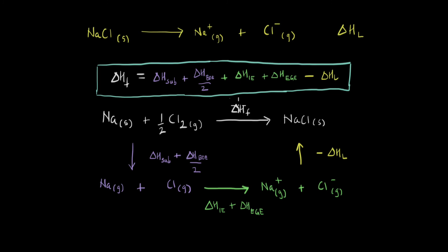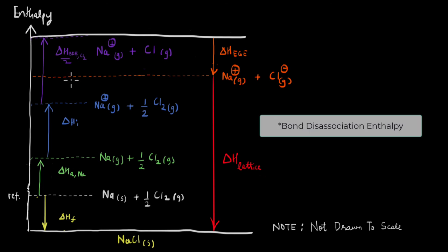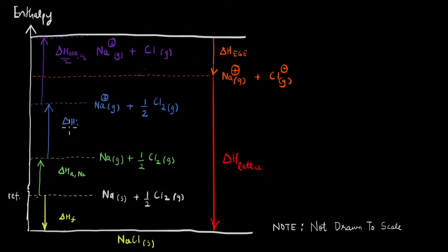The same idea can be represented in a different diagrammatic form. Earlier we had two paths from sodium plus chlorine gas forming NaCl — the direct path (ΔH_f) and the sum of the other enthalpies. In this representation, each enthalpy is written individually: the atomization enthalpy, the ionization enthalpy, half of the bond dissociation enthalpy, the electron gain enthalpy, and the lattice enthalpy. By Hess's law, the enthalpy of formation equals the sum of all of these.